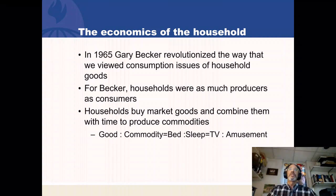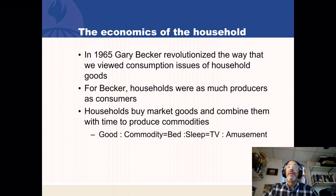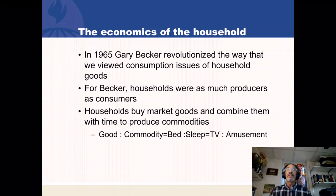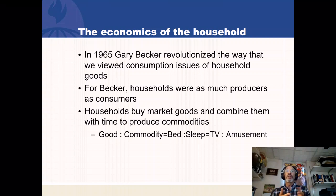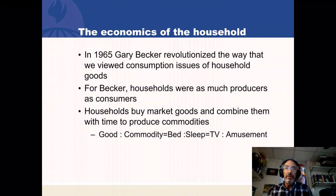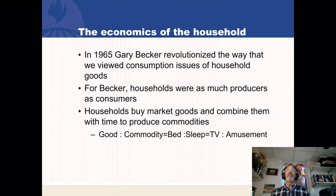Before Becker, only firms produced stuff. After Becker, households produced cooked food, clean houses, and domestic services — and now households produce health. Households are little factories: they buy market goods and combine them with time to produce commodities. A good is to commodity as bed is to sleep, as TV is to amusement. We buy a bed to produce what we really want — sleep. We buy a television and combine it with our time to produce the commodity called amusement. Now you can see where we're going: the household is a firm that produces health in this model.